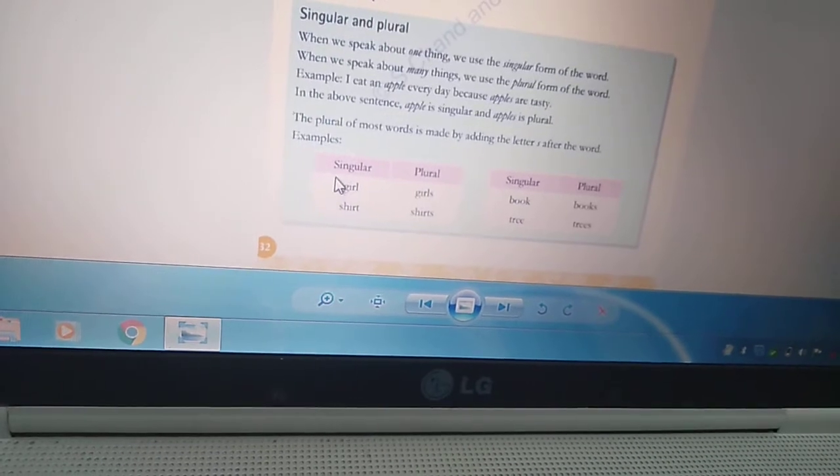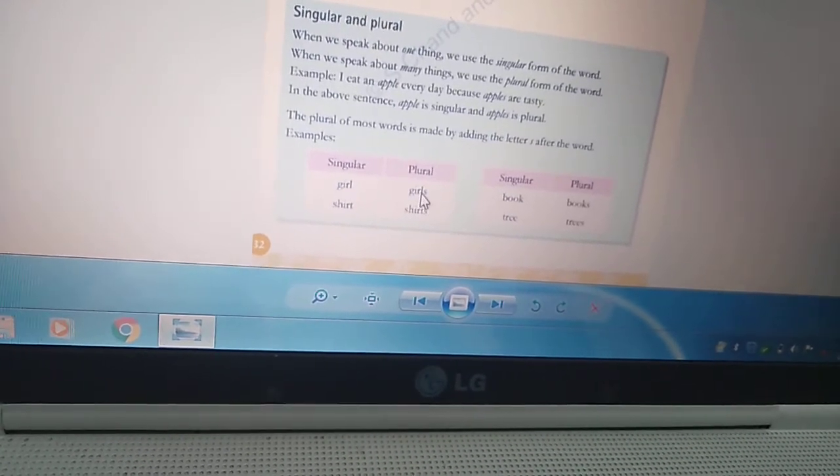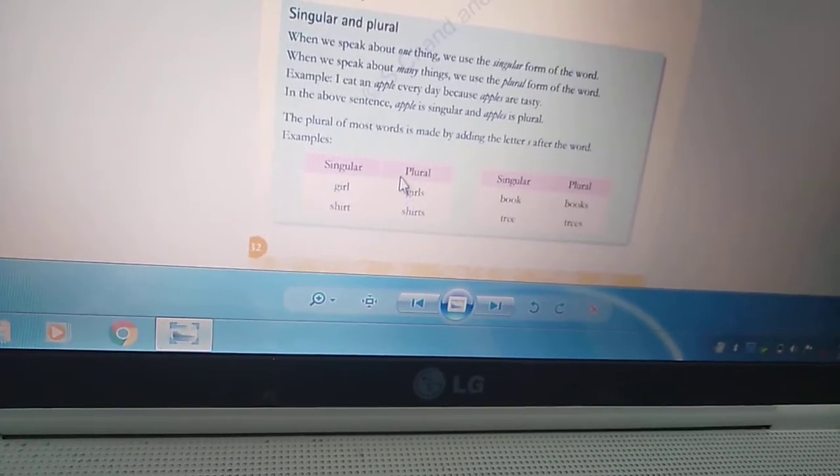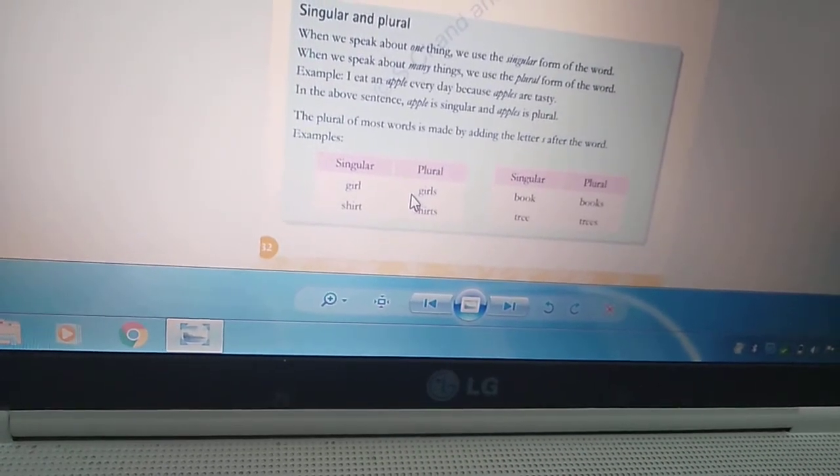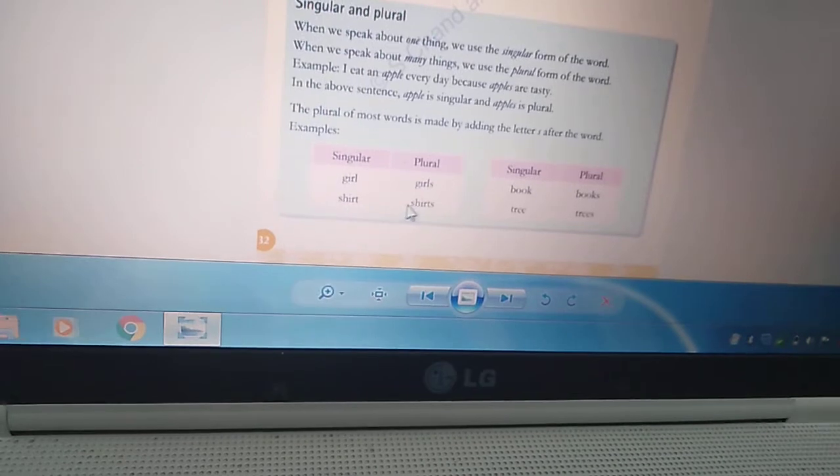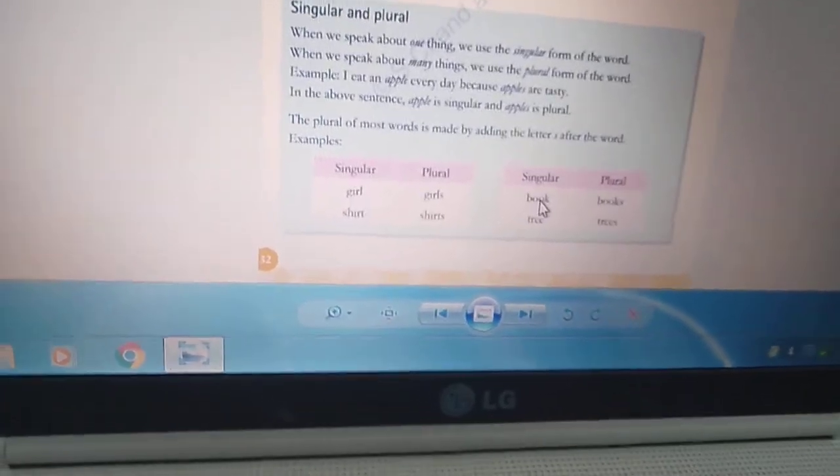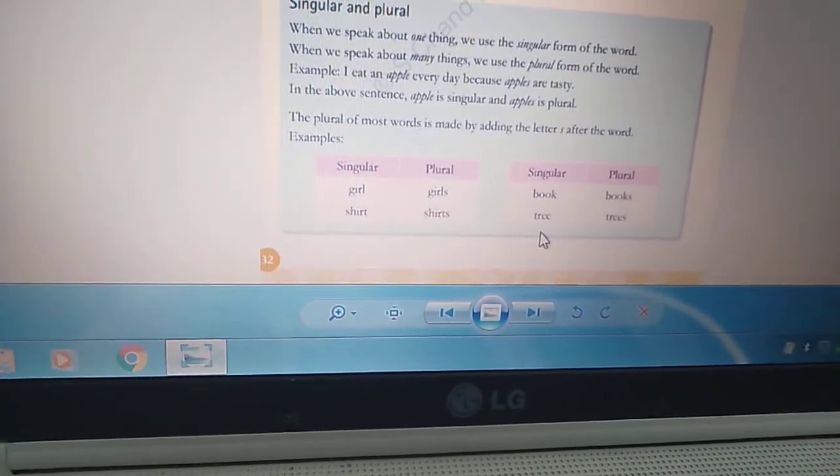Girl ka matlab hai only one girl. When we say girls, iska matlab two girls bhi ho sakta hai, three, four, many girls, kuch bhi ho sakta hai. Shirt, shirts. Book, books. Tree, trees.